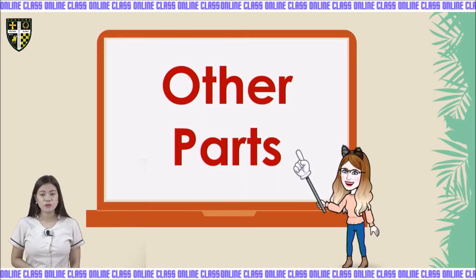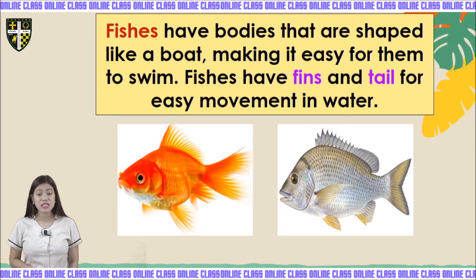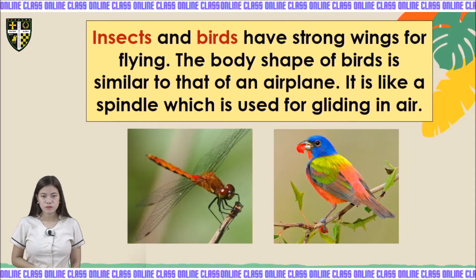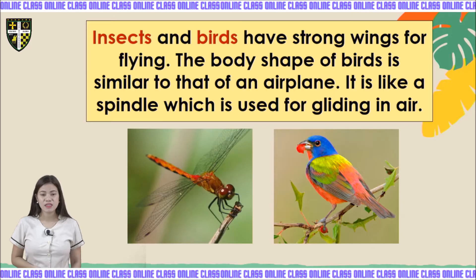Fishes have bodies shaped like a boat, making it easy for them to swim. Fishes have fins and a tail for easy movement in water. Insects and birds have strong wings for flying. The body shape of birds is similar to that of an airplane — like a spindle, which is used for gliding in air.